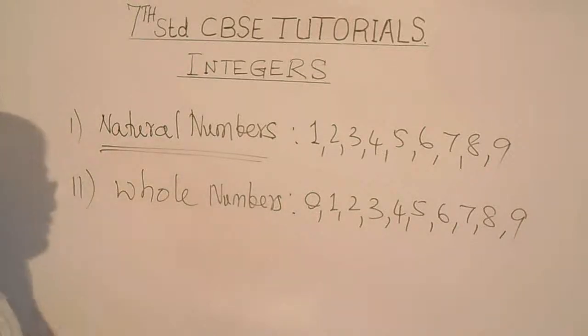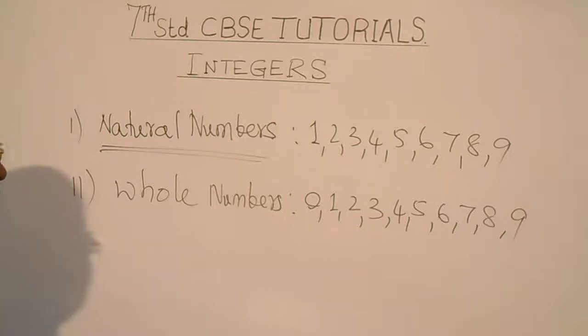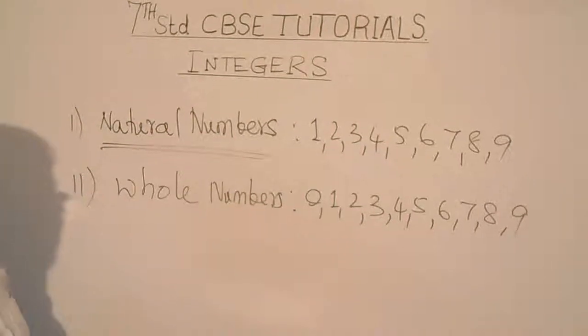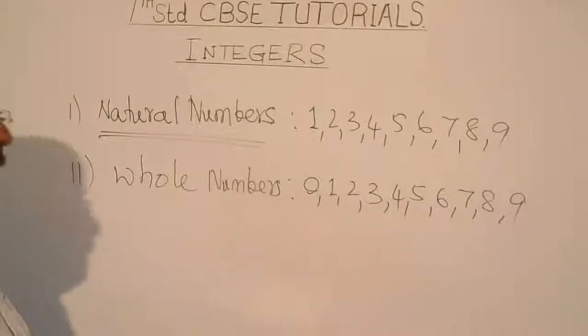One more — what are whole numbers? Whole numbers are also counting numbers, but they include zero. So whole numbers include zero and the natural numbers: one, two, three, four, five, six, seven, eight, nine. Basically, the natural numbers are the counting numbers one to nine, and the whole numbers are natural numbers but include zero.